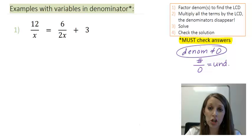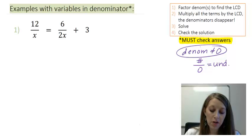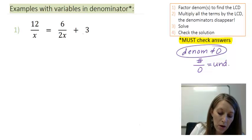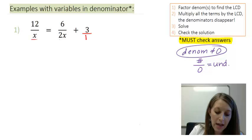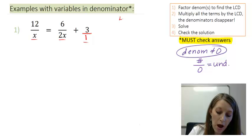This is just using the magic trick method again, so other than checking the answer at the end, the process is exactly the same. I suggest that you pause the video and see if you can get the answer on your own. The first thing I need to do is find my LCD. Looking at my denominators, I have an x, a 2x, and a 1, so my LCD in this problem is going to be 2 times x.